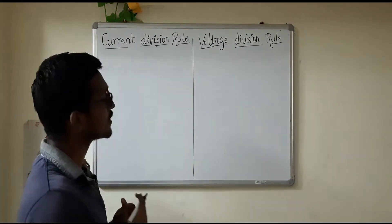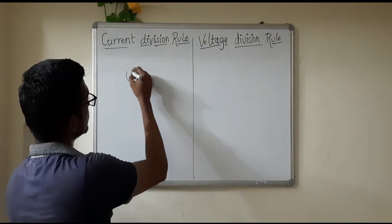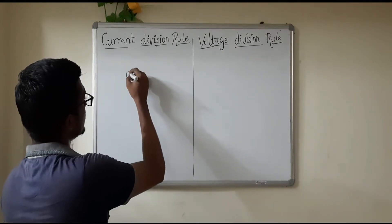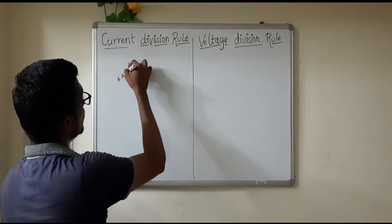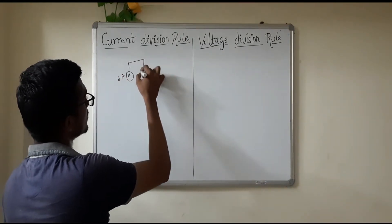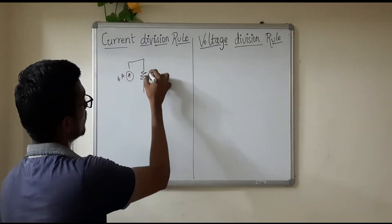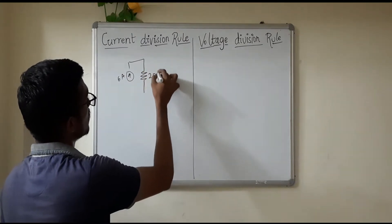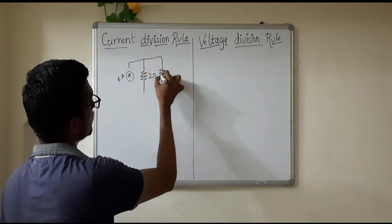First, there is a current source. There is a 2 ohm resistance and a 4 ohm resistance connected in parallel.